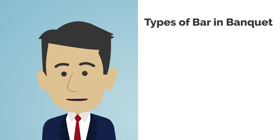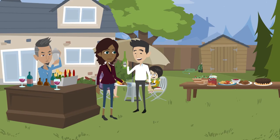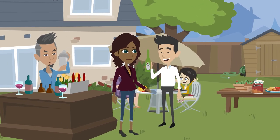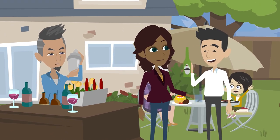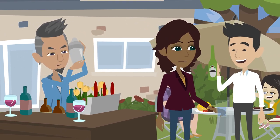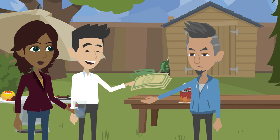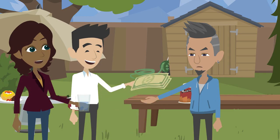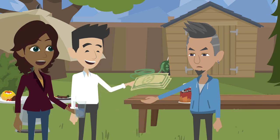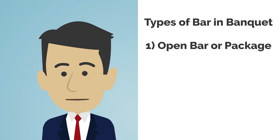The first type of bar in the banquet is a package or open bar. In this type of bar, a guest will pay one price for a specified time. Throughout the time, the guest may order as many drinks as they like, within the limits of responsible alcoholic service. The meeting planner or the host will pay a fixed fee for this time, and guests have an option of all drinks available in the bar package.